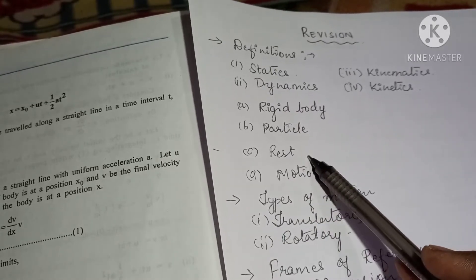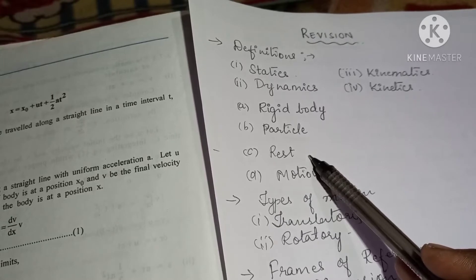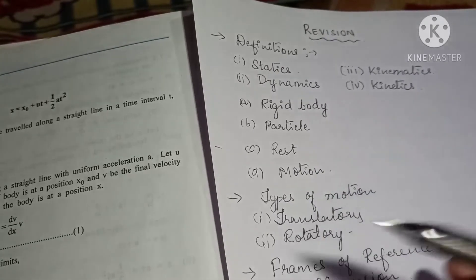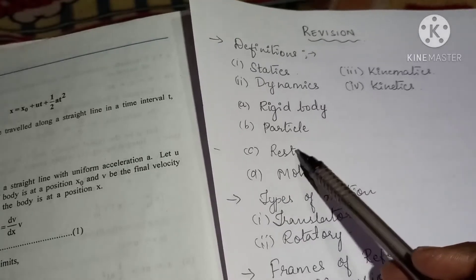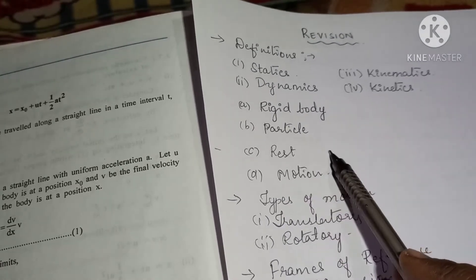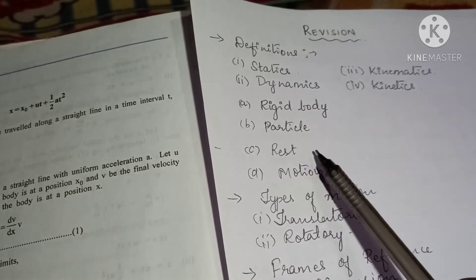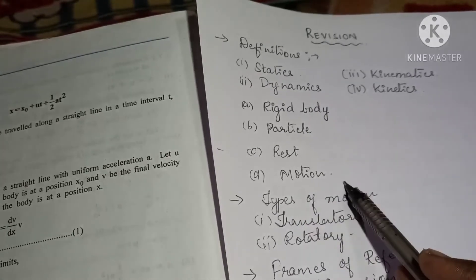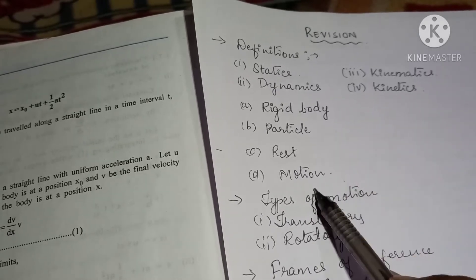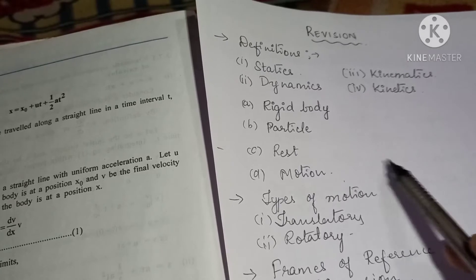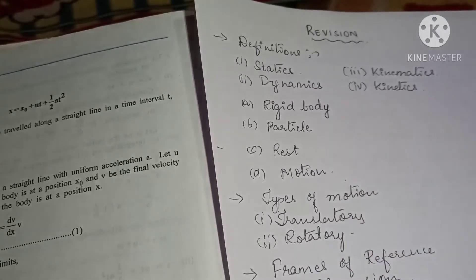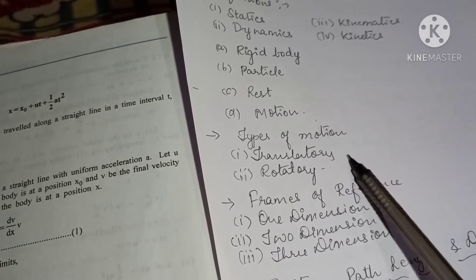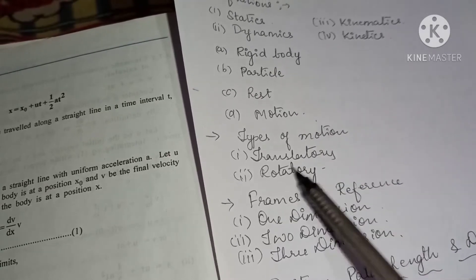Rest means the object remains in the same position with respect to its surroundings even after the elapse of time — the body doesn't move at all. Motion means the body changes its position from one point to another with respect to the surroundings and with respect to time.